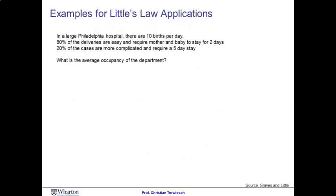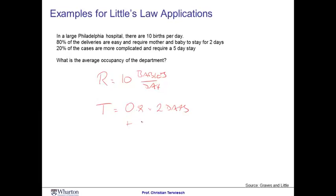Here's another interesting example of Little's Law. Imagine you're working for a large hospital where ten babies are born per day. 80% of deliveries are easy and require mother and baby to stay only two days. 20% of cases are more complicated and require a five-day stay. The flow rate is simply 10 babies per day. The average flow time is 80% times two days plus 20% times five days, which is 1.6 plus 1.0, equaling 2.6 days.